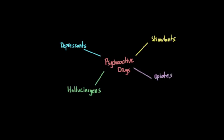Drugs that are classified as depressants depress our central nervous system functions, so they decrease the level of arousal or stimulation in certain areas of our brain. They decrease our heart rate, lower blood pressure, and slow our breathing. They can cause dizziness and lack of coordination. And importantly, they lower our processing speed, which can affect how we interpret and react to things around us, causing us to think and act more slowly.